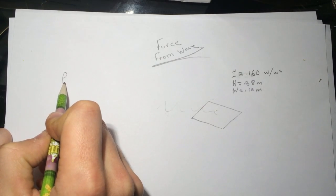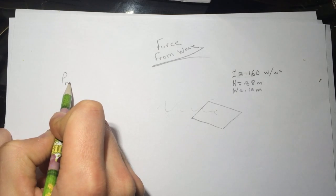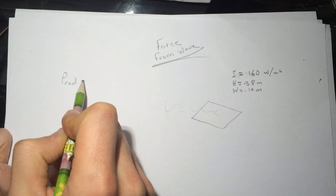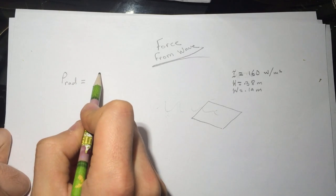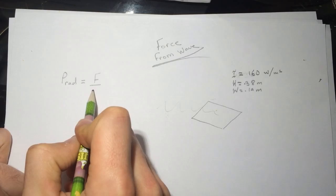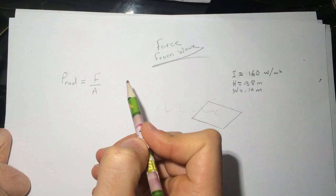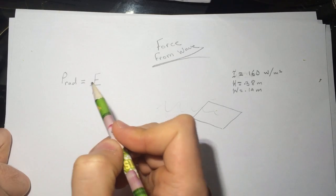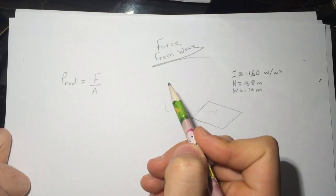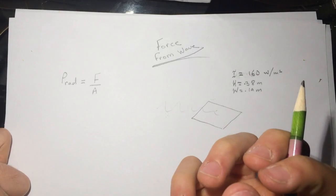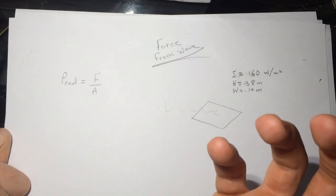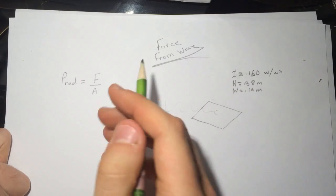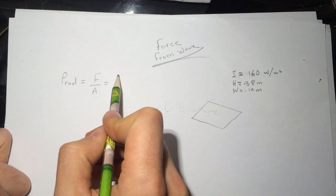And any pressure is force divided by the area. And if the material absorbs all this electromagnetic thing, then it's gonna be equal to the average intensity divided by the speed of light.